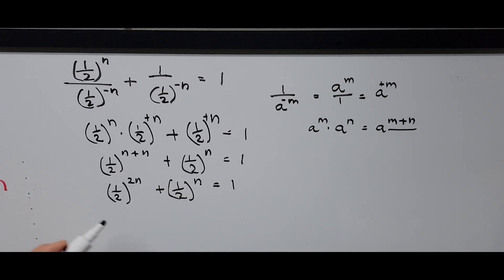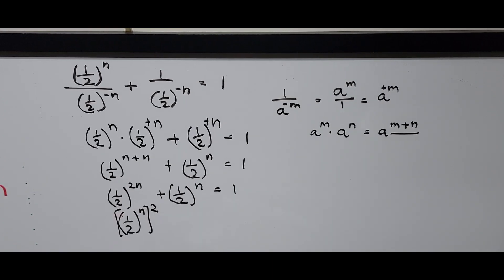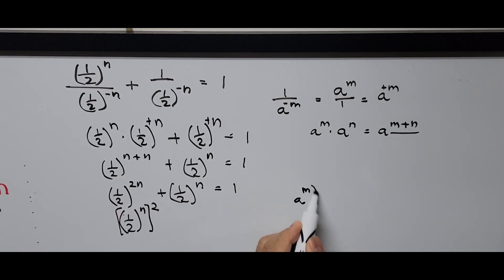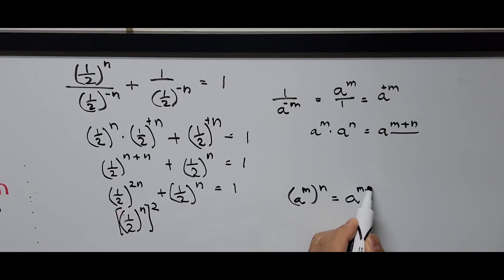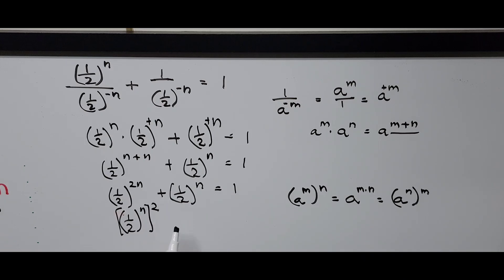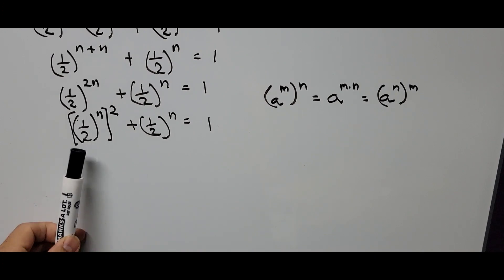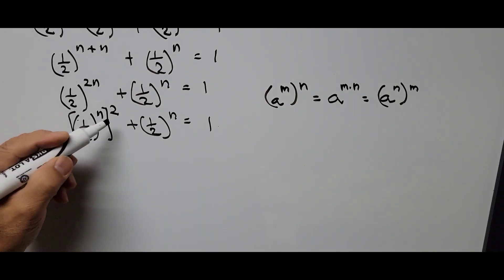The term (1/2)^(2n) can be rewritten as ((1/2)^n)^2, using the exponent rule (a^m)^n = a^(mn). So the equation becomes ((1/2)^n)^2 plus (1/2)^n equals 1. This has transformed into a quadratic equation, since we have an exponent of 2.